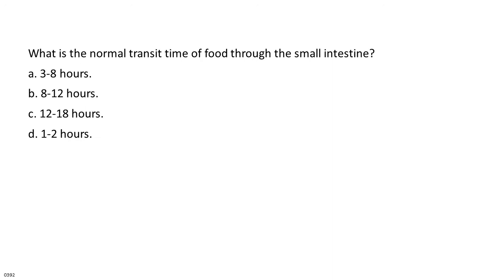What is the normal transit time of food through the small intestine? a. 3 to 8 hours. b. 8 to 12 hours. c. 12 to 18 hours. d. 1 to 2 hours.